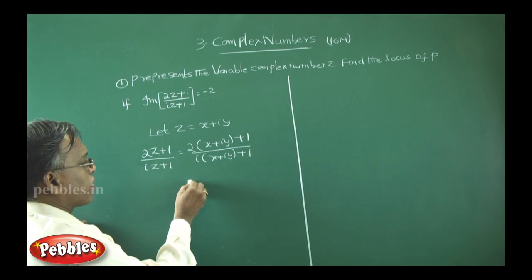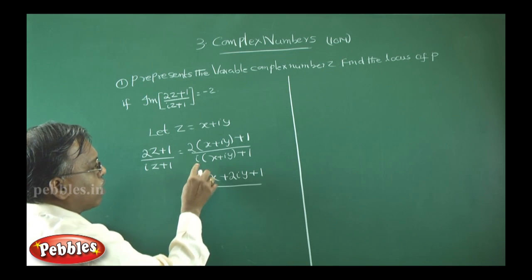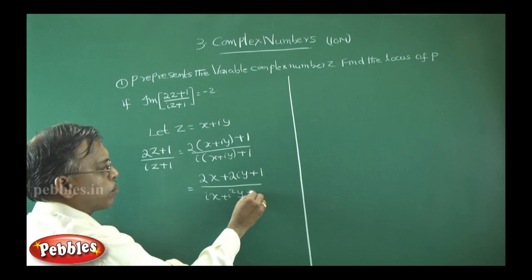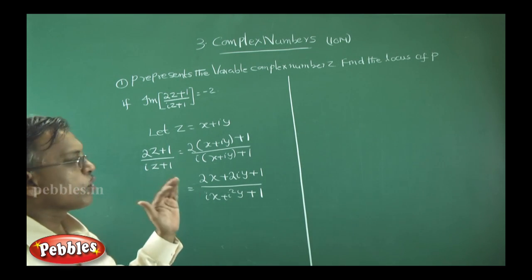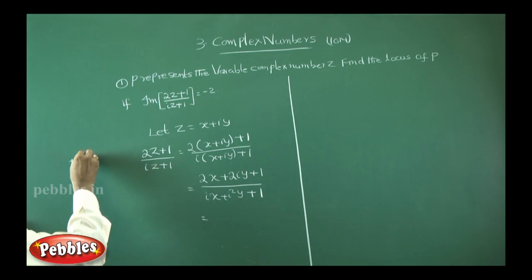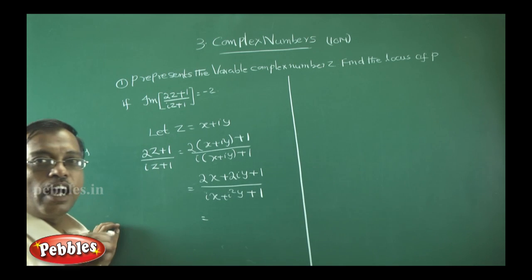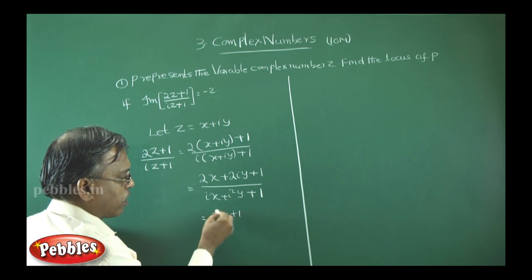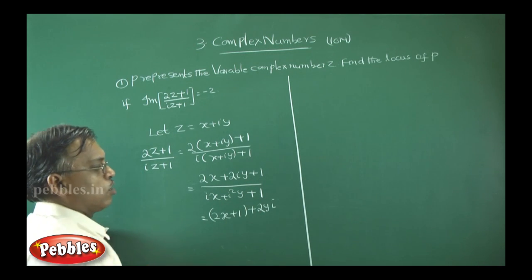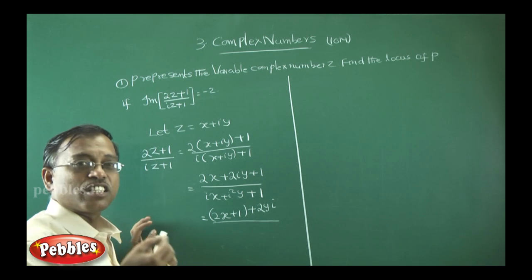Multiply out: the numerator becomes 2x + 2iy + 1. The real part is (2x + 1) and the imaginary part is 2y, so the numerator in complex form is (2x + 1) + 2yi. For the denominator, i(x + iy) + 1 gives ix + i²y + 1. Since i² = −1, this becomes (1 − y) + ix in complex number form.